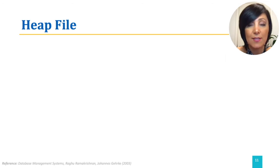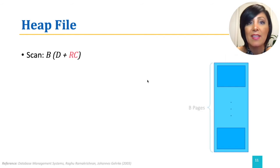First, let's start with the easiest file organization, the heap file. As we discussed earlier, the records in a heap file are stored in no particular order. To scan a heap file, we need to retrieve each of the B pages in the heap file. This will take B times D, since the average time to read a page is D. For each page, we need to process R records. Therefore, we need to process a total of B times R records, and processing each record takes C seconds. Therefore, the cost of scan operation will be B times (D plus R times C).